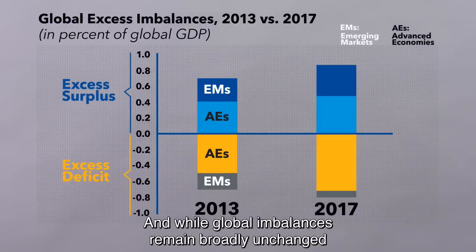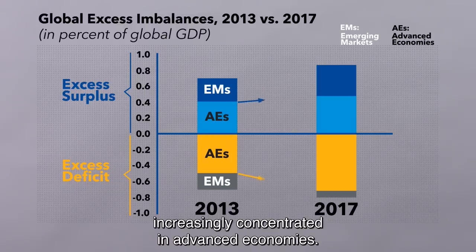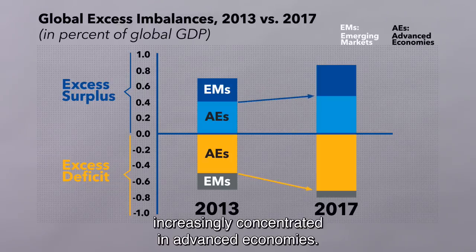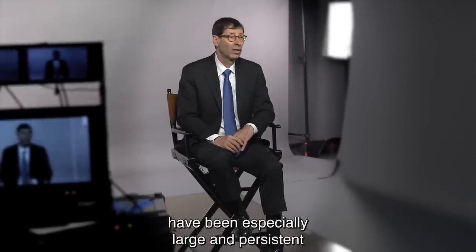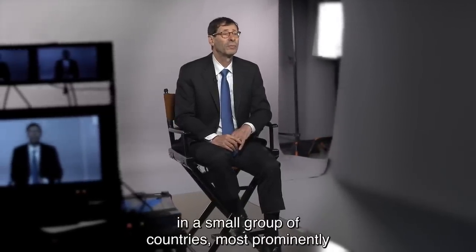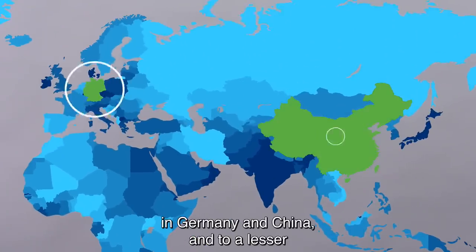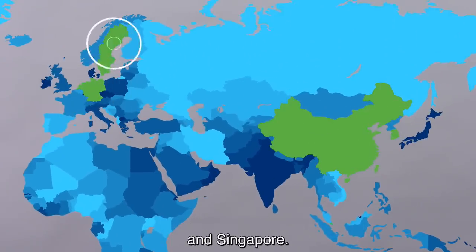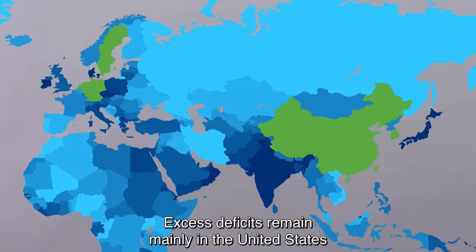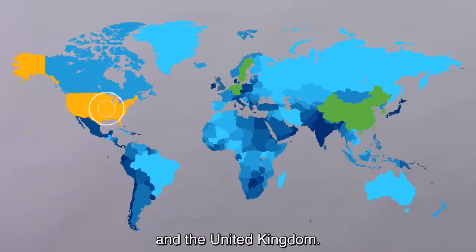And while global imbalances remain broadly unchanged in recent years, they have become increasingly concentrated in advanced economies. From a global perspective, excess surpluses have been especially large and persistent in a small group of countries, most prominently in Germany and China, and to a lesser extent in Korea, the Netherlands, Sweden, and Singapore. Excess deficits remain mainly in the United States and the United Kingdom.